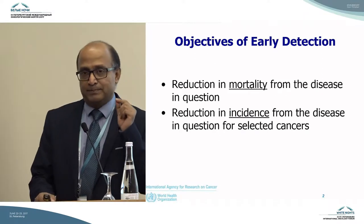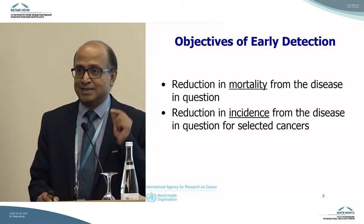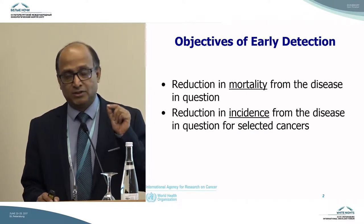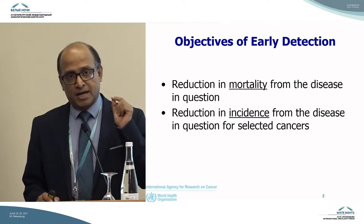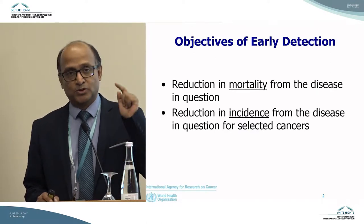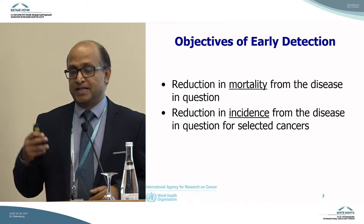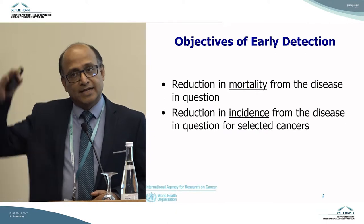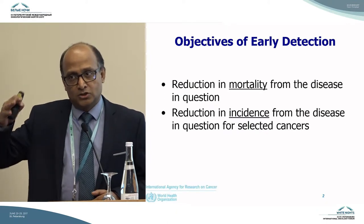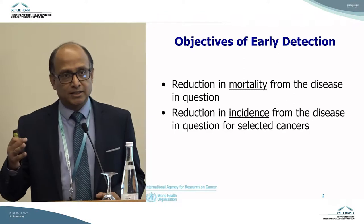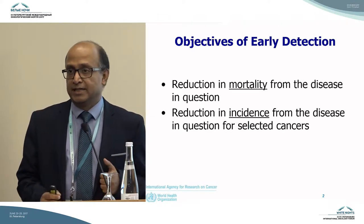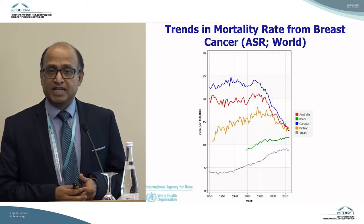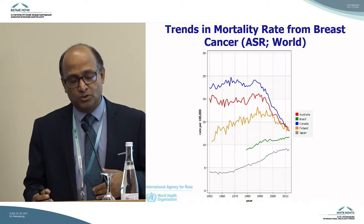The very basic aim of cancer early detection is to reduce the number of deaths from that particular disease. And in some of the cancers, because we know there is a pre-malignant state, we can prevent that cancer and reduce the incidence. So cancer early detection can, number one, reduce the mortality and number two, reduce the incidence. And there is adequate evidence from around the world.